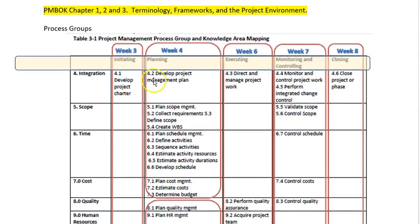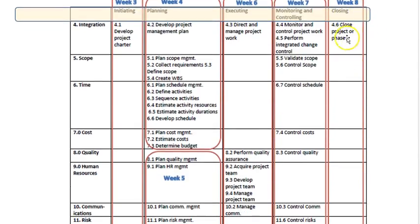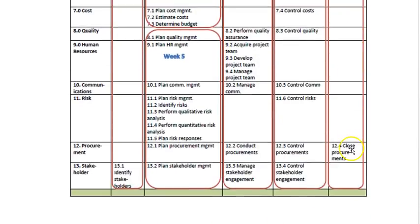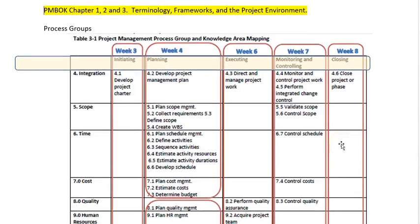Finally, at the end of the project, the garage is built, everything on our to-do list has been done, and we go into project closing. We go to our funding source and say it's done — please sign off on it. We pay off all of our vendors and close all contracts. So that's how any given project works through the five process groups: initiating, planning, executing, monitoring and controlling, and finally closing.